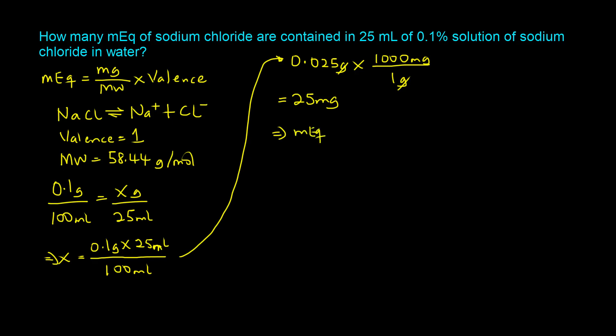And that would imply that you have milliequivalence being equal to 25 milligrams, which would be the weight of sodium chloride in the preparation, divided by the molecular weight which is 58.44, and we multiply that by the valence which is 1. And that should be equal to 0.428 or approximately 0.43.